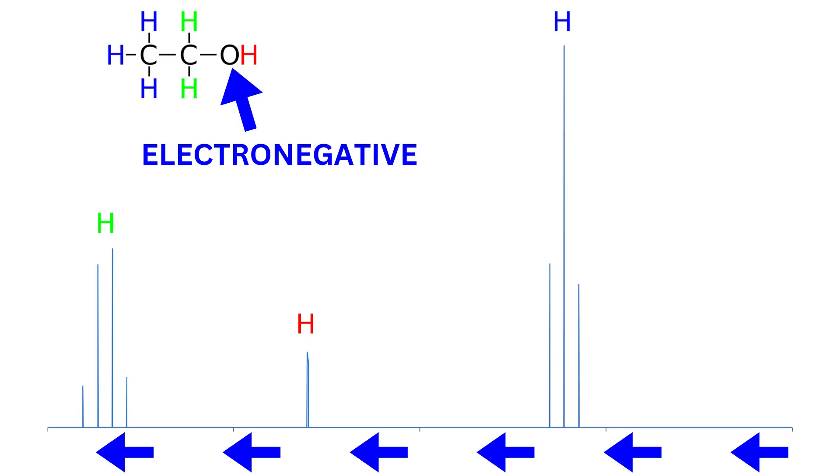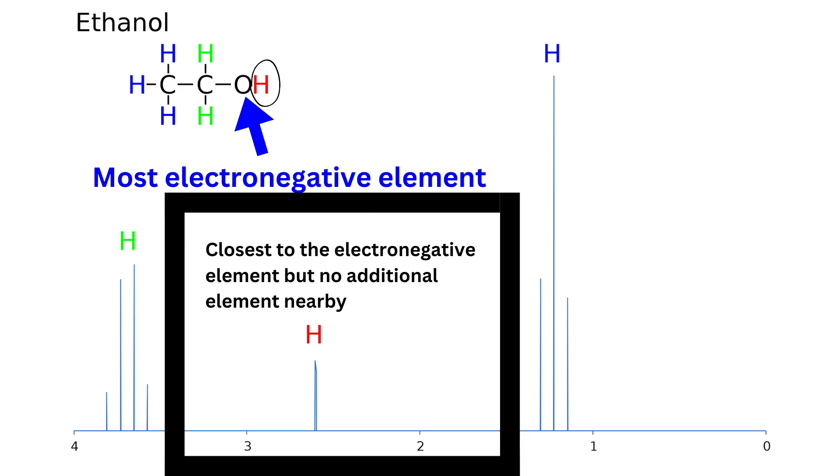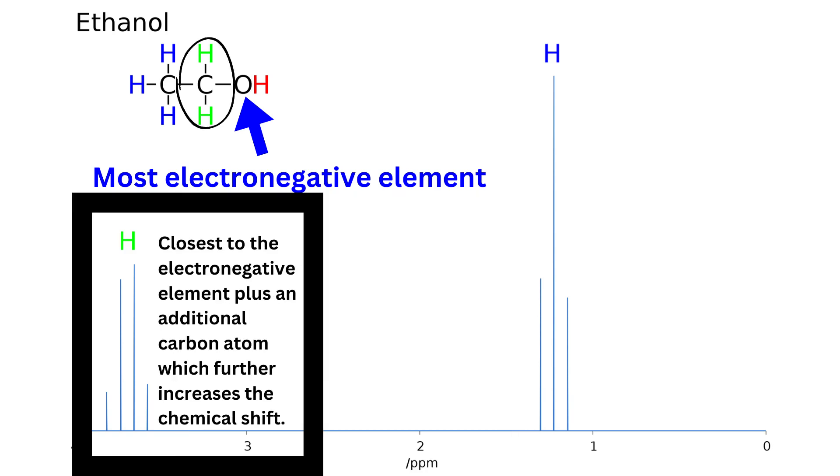The chemical shift is inversely proportional to the distance between the hydrogen and the electronegative elements. More simply put, hydrogens that are closer to any electronegative elements are more chemically shifted to the left.